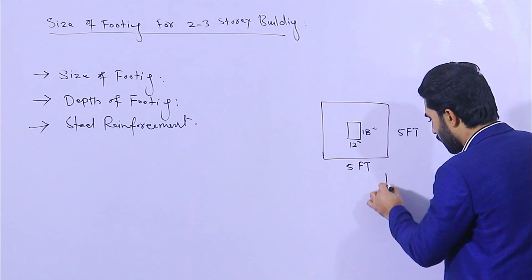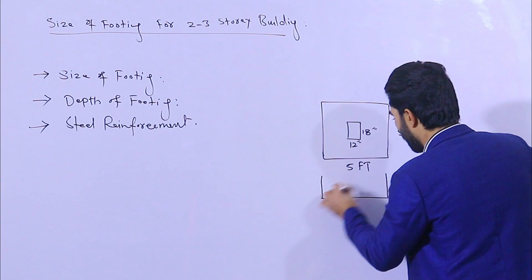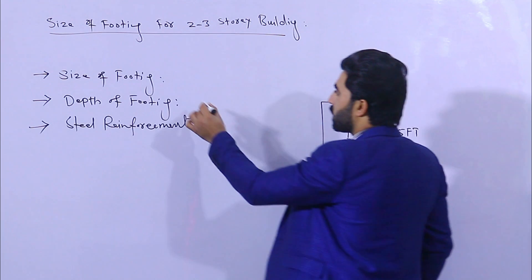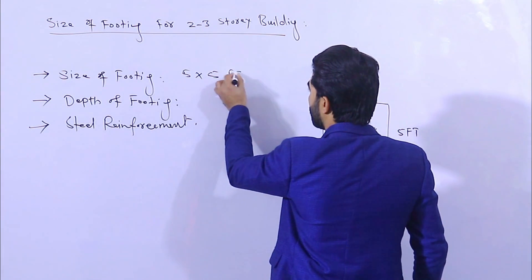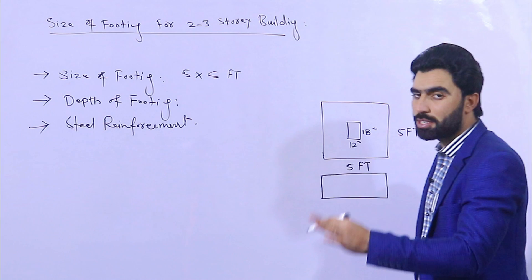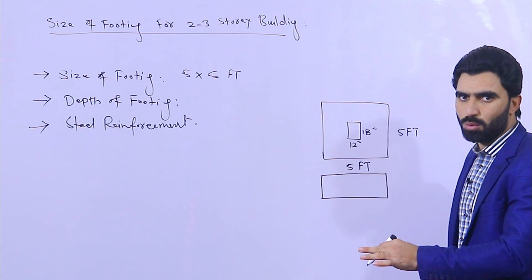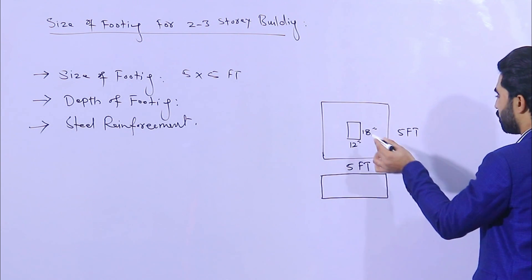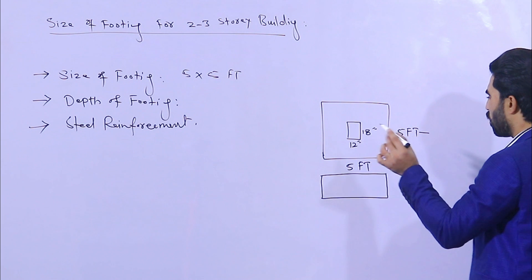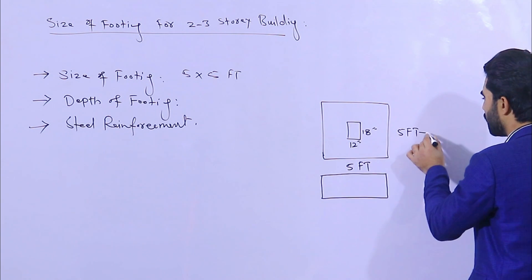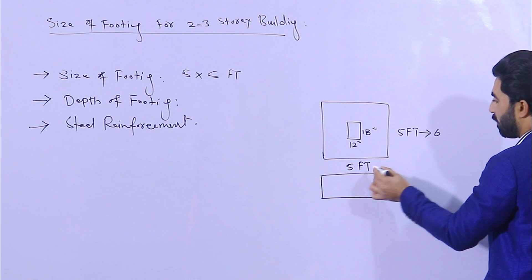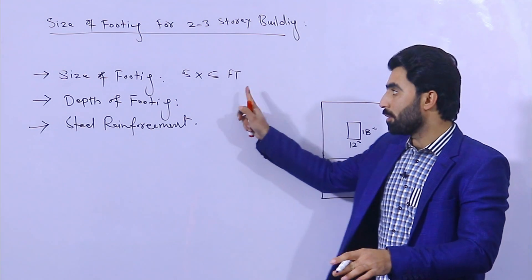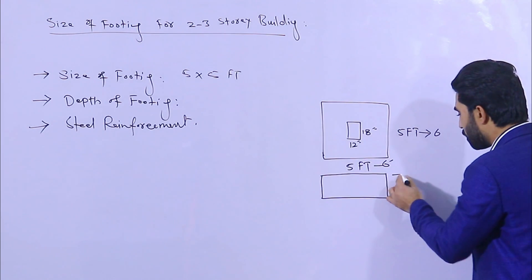What should be the depth of footing? The size is five by five feet — not less than this. You can increase it but not less than that. If you want to go to the safer side, it should not be less than six by six feet for three stories. But the minimum is five by five — remember that.